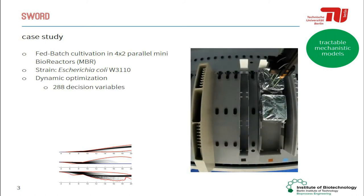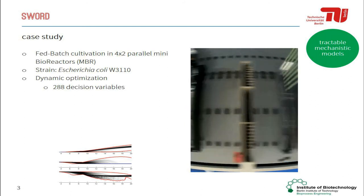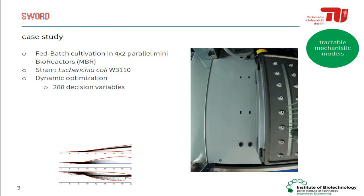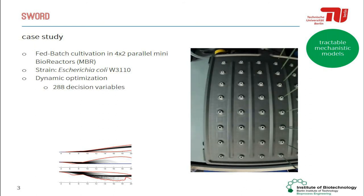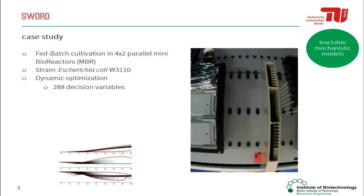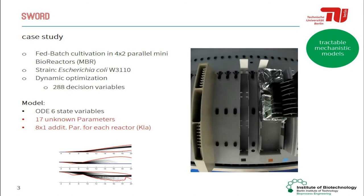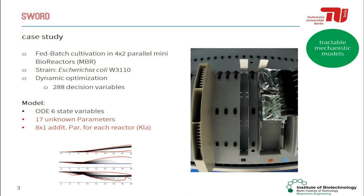By this we end up with a dynamic optimization problem with 288 decision variables, and the model that we were using was an ordinary differential equation system with six state variables. We had altogether 25 parameters to fit, since each reactor has a different KLA and it is also process dependent.